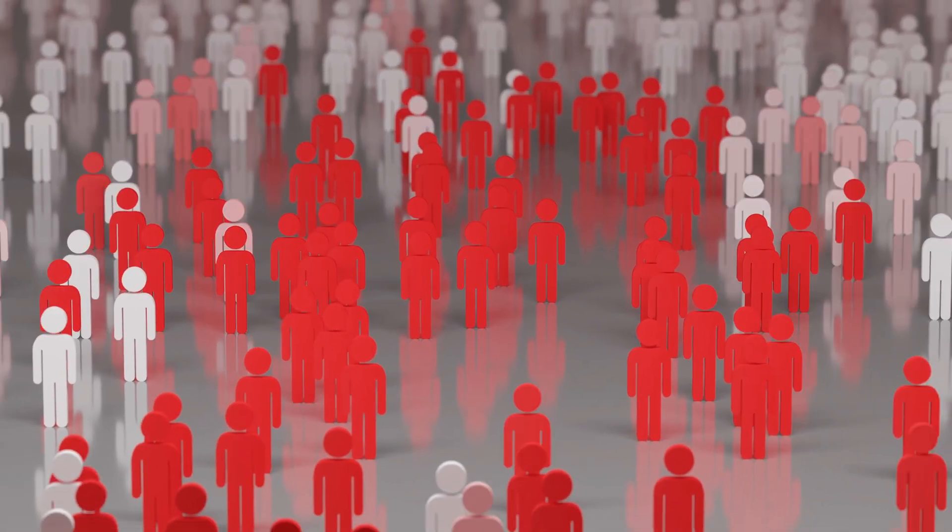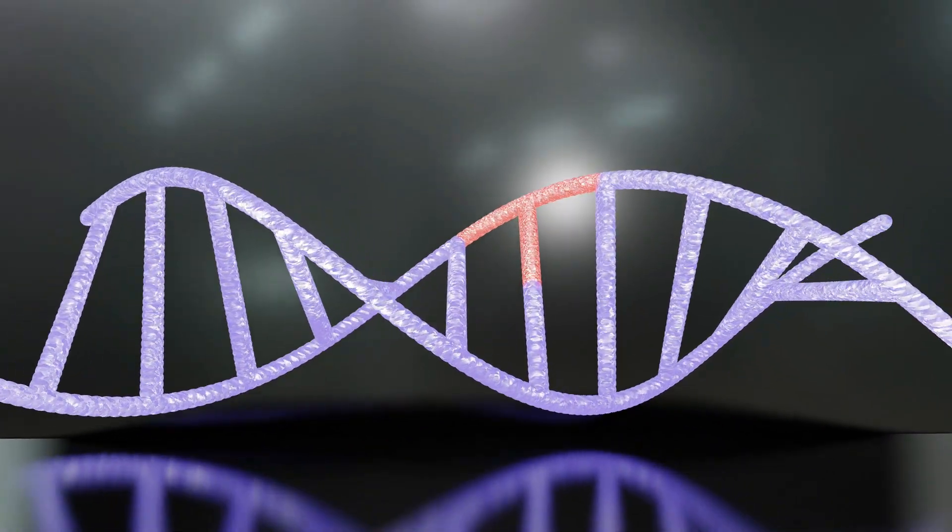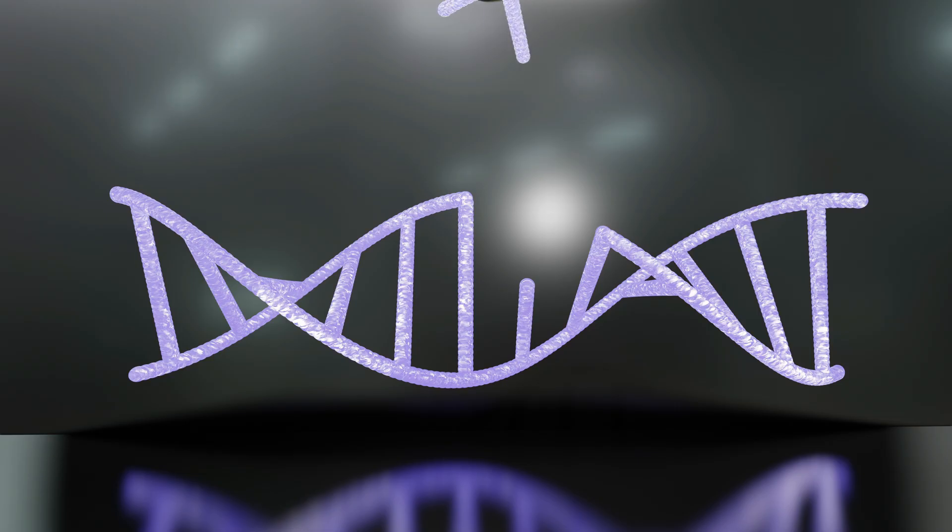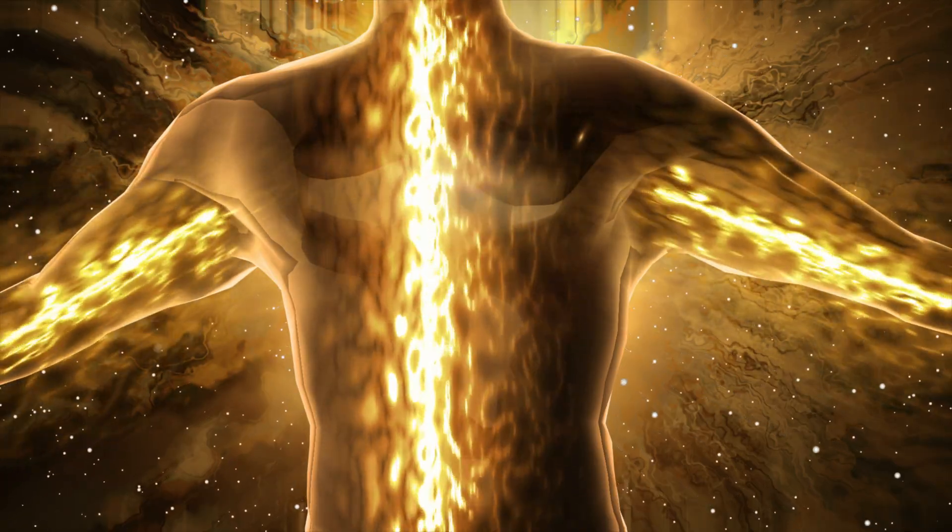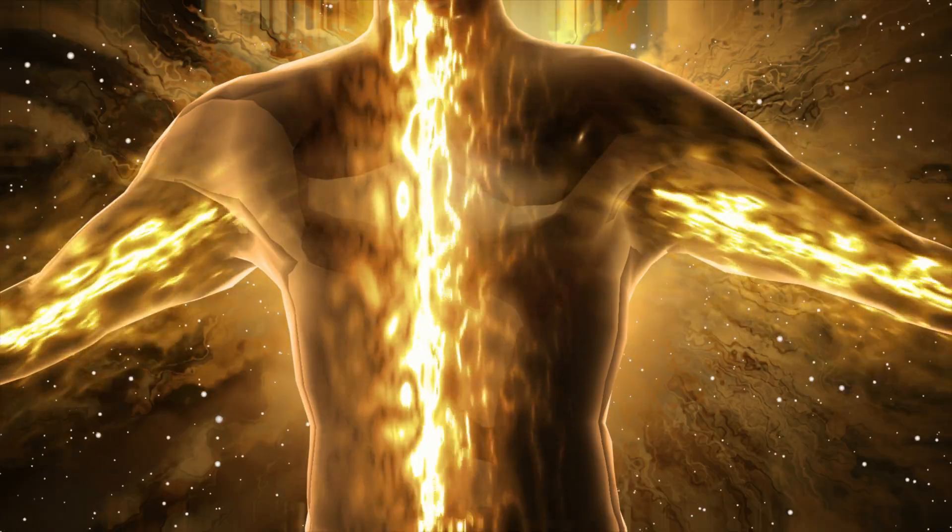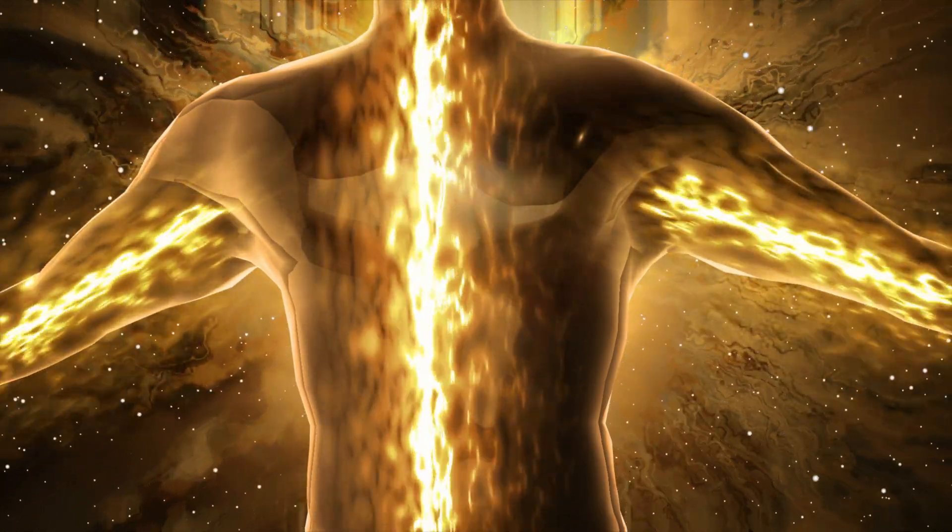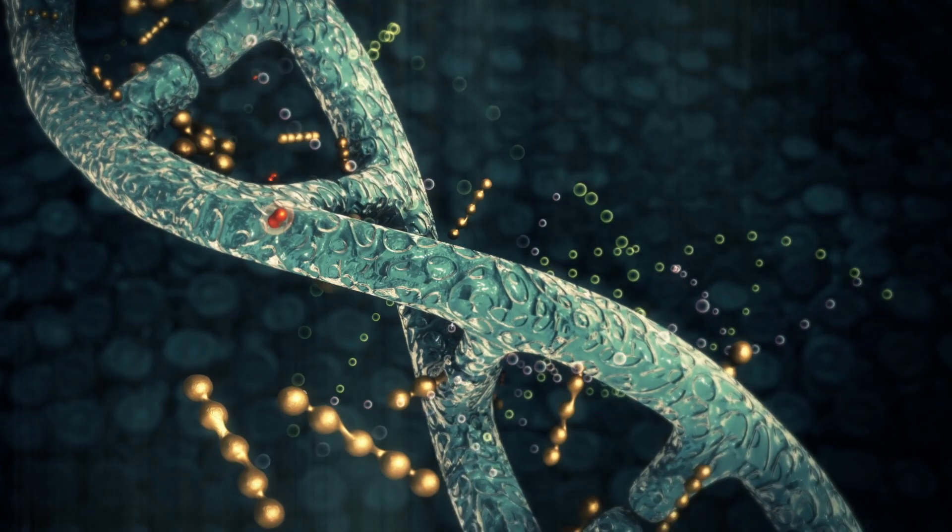CRISPR works like molecular scissors, snipping and rewriting DNA with astonishing precision. In labs, it's cured blindness, erased inherited diseases, and rewritten the genetic code of plants and animals. But using it on humans crossed a line we hadn't even agreed on yet. The edits could pass down through generations, changing not just individuals, but the entire human story.